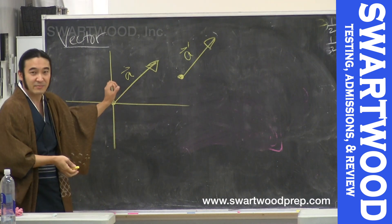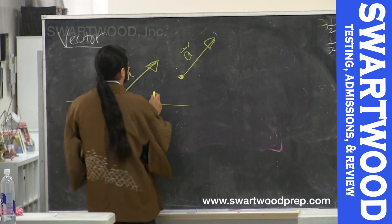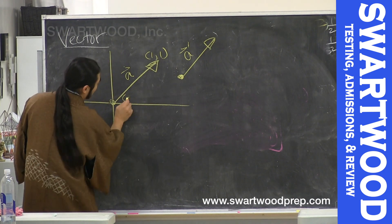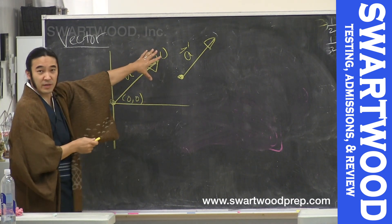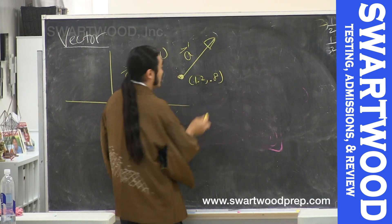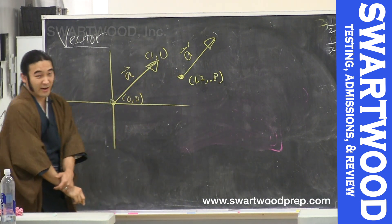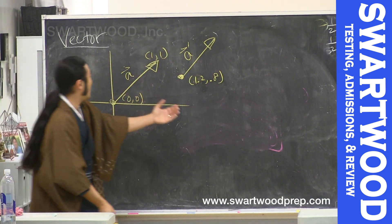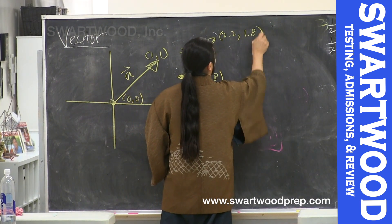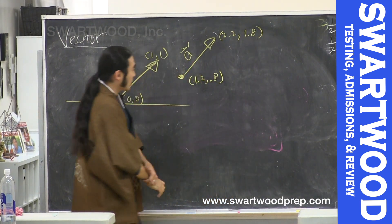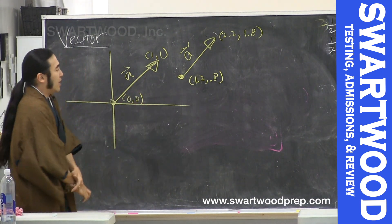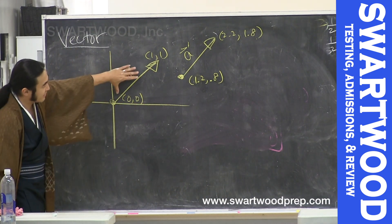We're going to make life easy by using good notation. Say this vector went from (0,0) to (1,1), and this other vector goes from (1.2, 0.8) up to (2.2, 1.8). Let's trust for the moment that these are identical vectors.